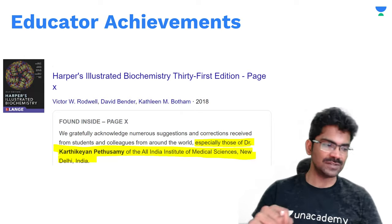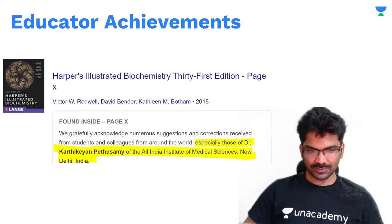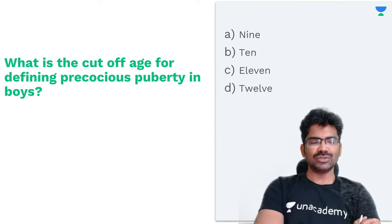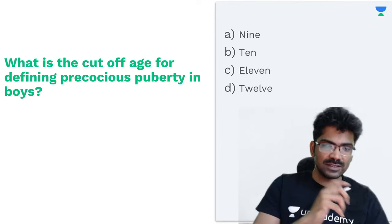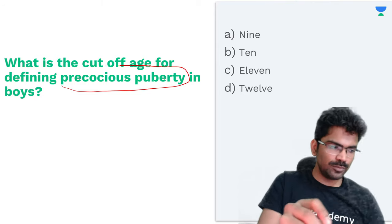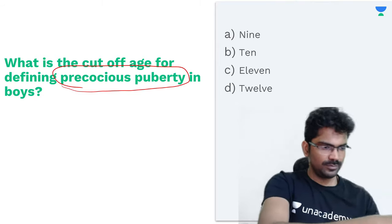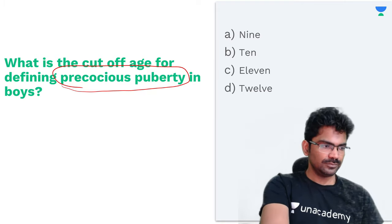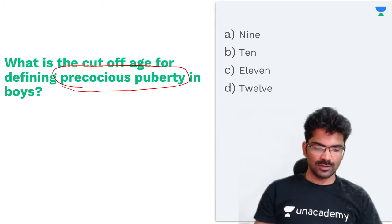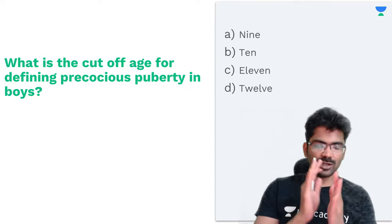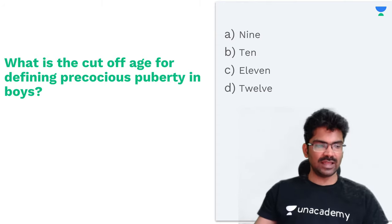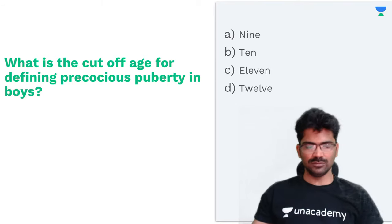Let's begin with this question: What is the cutoff age for defining precocious puberty in boys? The question asks about precocious puberty in boys. What is the answer — is it 9, 10, 11, or 12? What is the cutoff age?